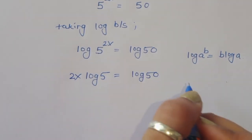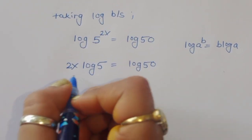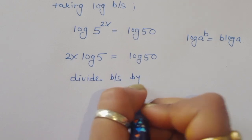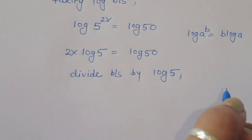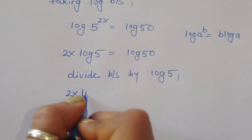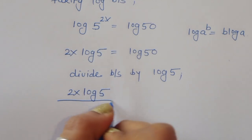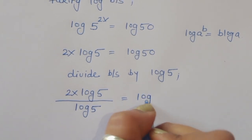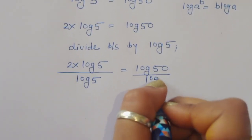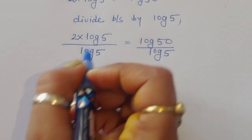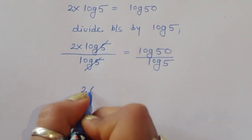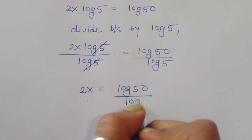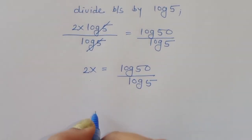Now we have to cancel log(5), so we divide both sides by log(5). 2x·log(5) divided by log(5) is equal to log(50) divided by log(5). Log(5) cancels, so 2x is equal to log(50) / log(5).